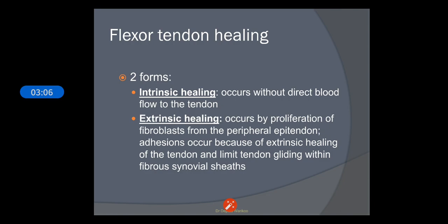There are two forms of tendon healing that mainly occur in flexor digitorum superficialis and flexor digitorum profundus. First is intrinsic healing and second is extrinsic healing. Intrinsic healing relies on synovial fluid for nutrition and occurs only between the tendon ends, without direct blood flow to the tendons. Extrinsic healing depends on the formation of adhesions between the tendons and the surrounding tissue, providing blood supply and fibroblasts, but unfortunately it also prevents the tendon from gliding.